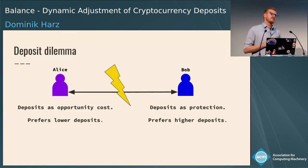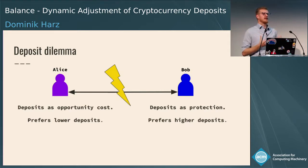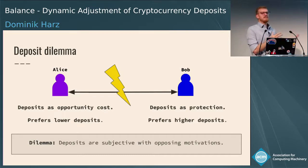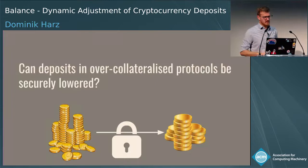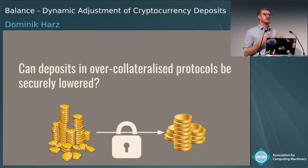There's another problem between motivation and how to set the deposit size. Alice as a service provider obviously locks a lot of collateral, which incurs a cost — so Alice would prefer lower deposits. But Bob, the receiver of the service, wants protection against Alice's misbehavior — and for Bob, the more deposit Alice pays into the contract, the more security he has assuming rational agents. So we have this dilemma of opposing motivations. Our goal in the Balance protocol is: can we lower the amount of deposits while keeping the same security properties?